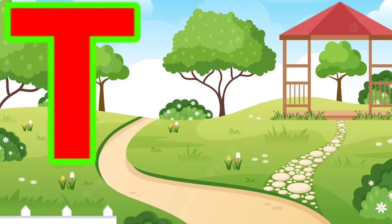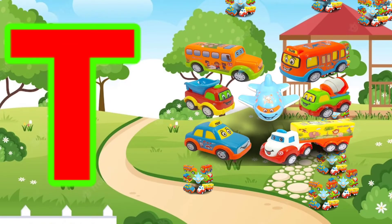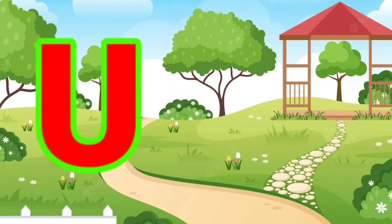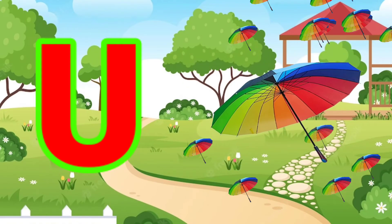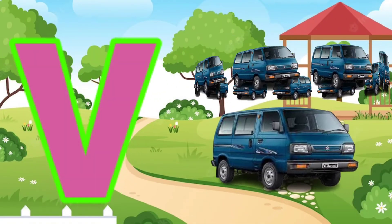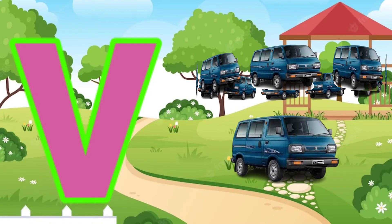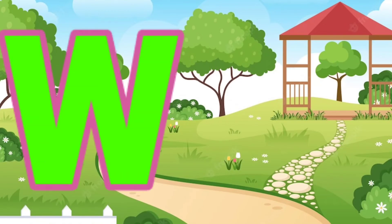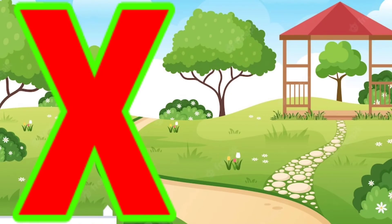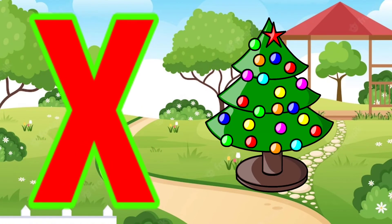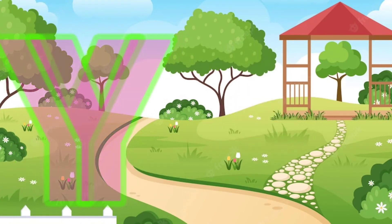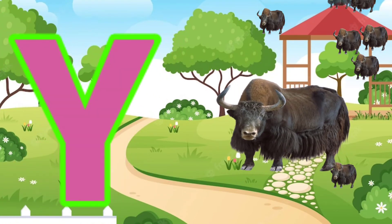T for toy, U for umbrella, V for van, W for watch, X for Xmas, Y for yacht.